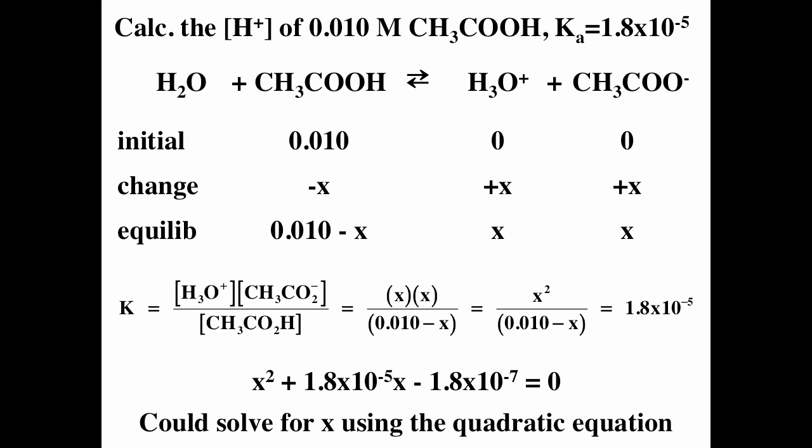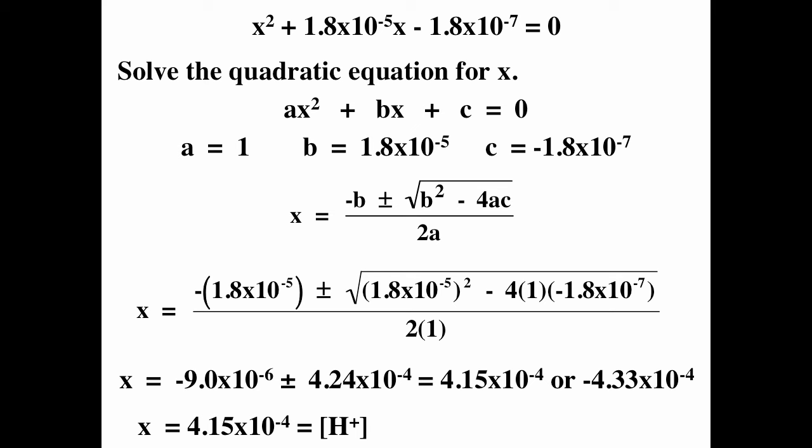Expanding gives x² + 1.8 × 10⁻⁵ x − 1.8 × 10⁻⁷ = 0. Using the quadratic formula, x = [−b ± √(b² − 4ac)] / 2a, with a = 1, b = 1.8 × 10⁻⁵, c = −1.8 × 10⁻⁷. The two roots are 4.15 × 10⁻⁴ and −4.33 × 10⁻⁴. Since concentration cannot be negative, x = 4.15 × 10⁻⁴ M, which is the hydrogen ion concentration.